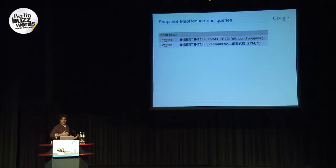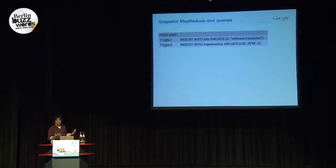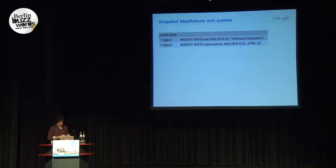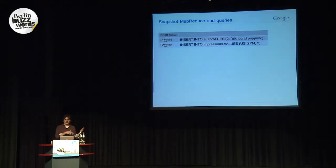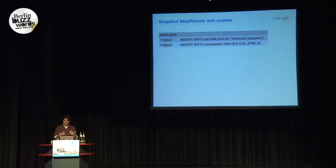Suppose you're writing a MapReduce or SQL query to audit ad impressions at the end of an hour. You pick some timestamp — one legitimate way is to pick the end of your hour — and run a MapReduce at that timestamp. There are only three legitimate outcomes: it sees nothing, it sees the ad but not yet any impressions, or it sees the impressions and potentially some prefix of subsequent impressions. In all of the systems we're replacing, the MapReduce or query has to tolerate an infinite number of other variations. It might see the impression but not the ad. When you're trying to write a query whose inputs have such weak semantics, it's really hard to tell the difference between a bug, corruption, or a concurrency anomaly.